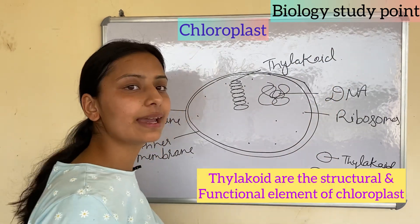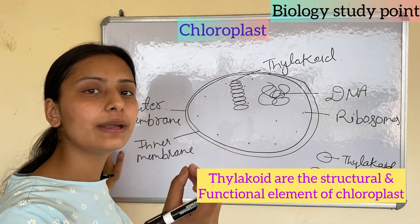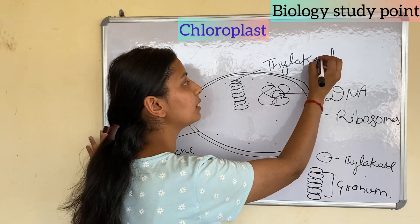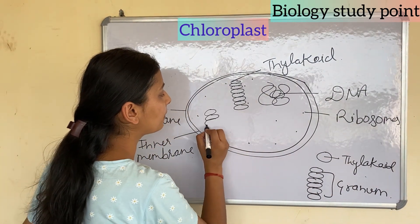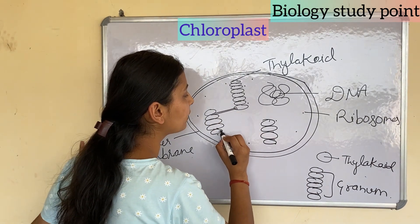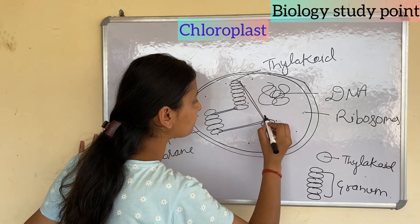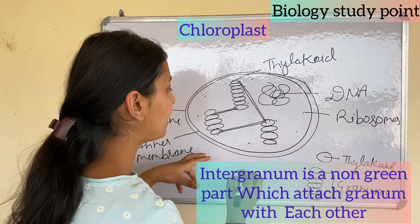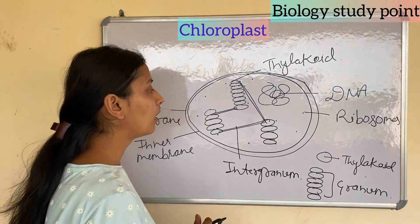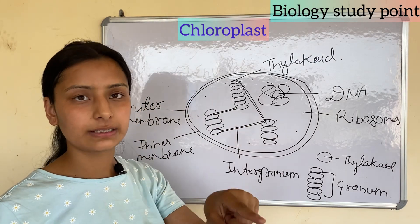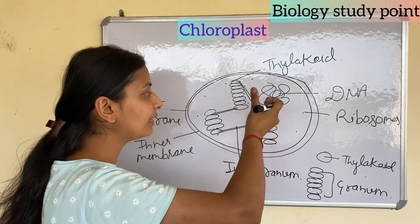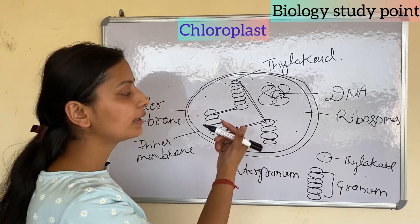Thylakoids are the working and structural unit of a chloroplast, where chlorophyll pigment is formed. One vesicle is a thylakoid; a pile of thylakoids is a granum. When multiple grana are interlinked by connecting lines, those connecting lines are called intergranum. The intergranum is a non-green part that attaches two or more grana together.